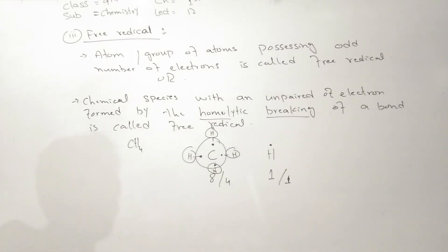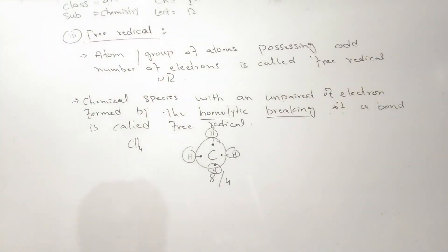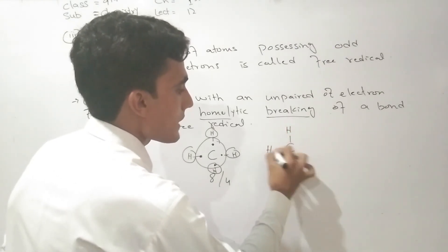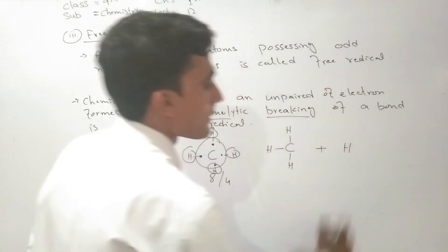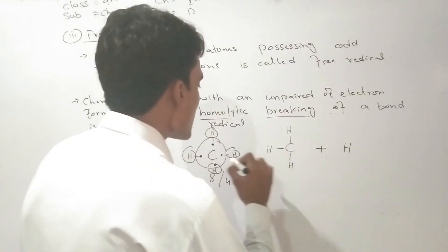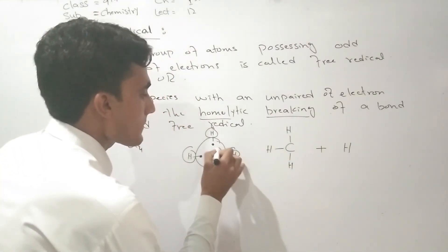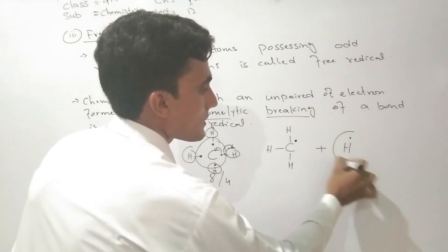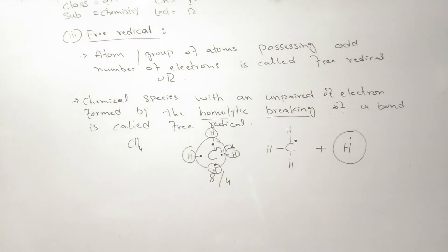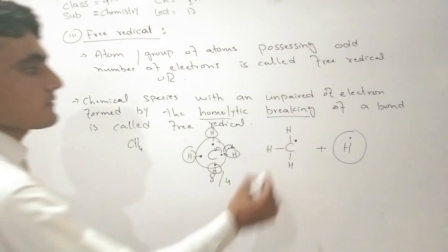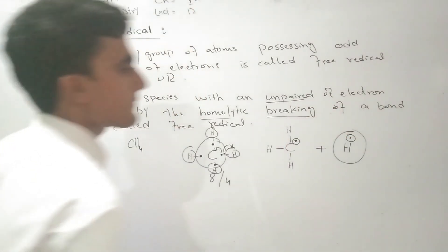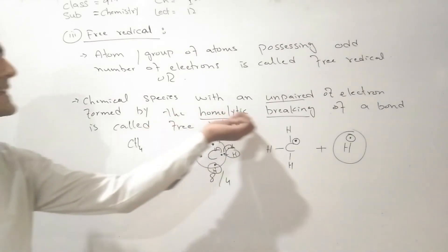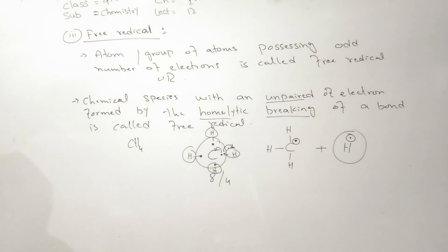Looking at the homolytic breaking of CH4: the first is homolytic breaking, and the second is hydrogen being removed. The carbon and hydrogen shared 2 electrons. With homolytic breaking, the 2 electrons split — each atom gets 1 unpaired electron. This is homolytic breaking: if the bond equals 2 electrons, the 2 atoms each get 1 electron.